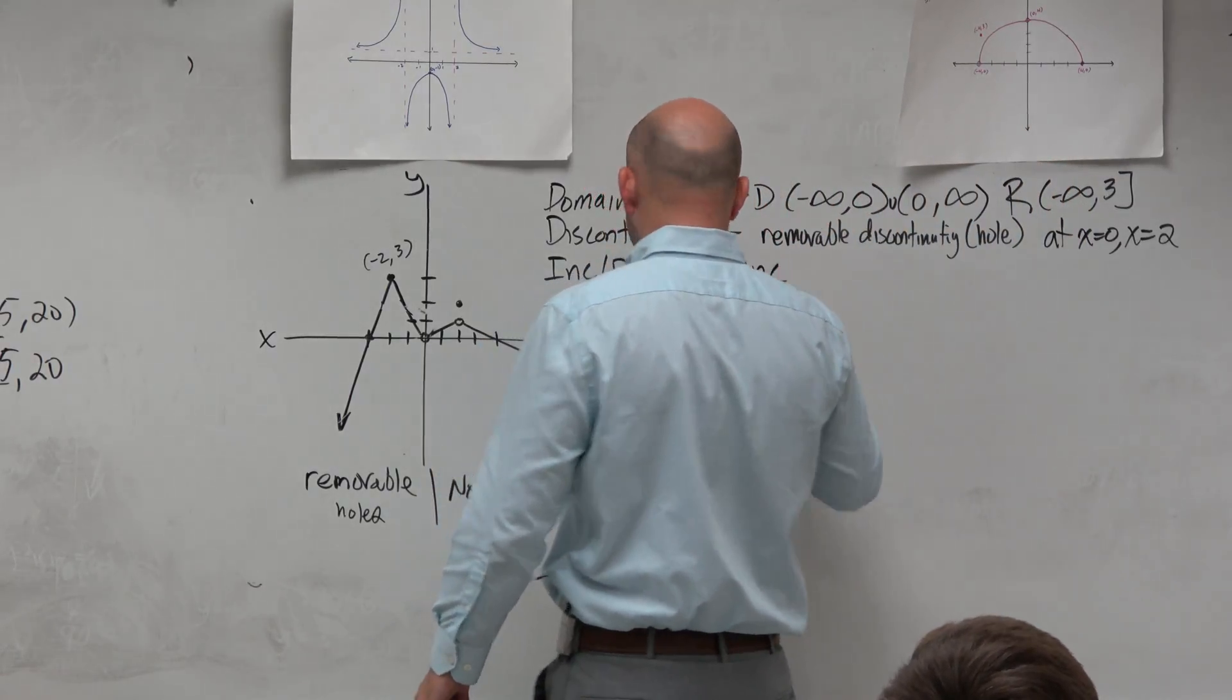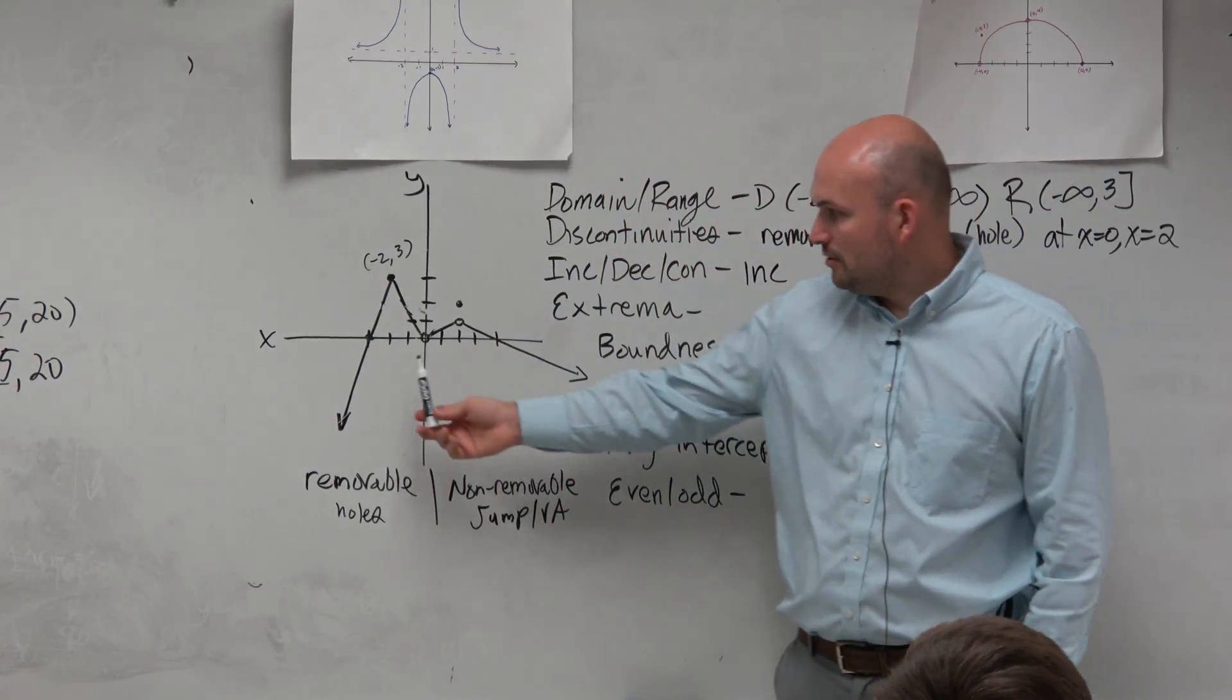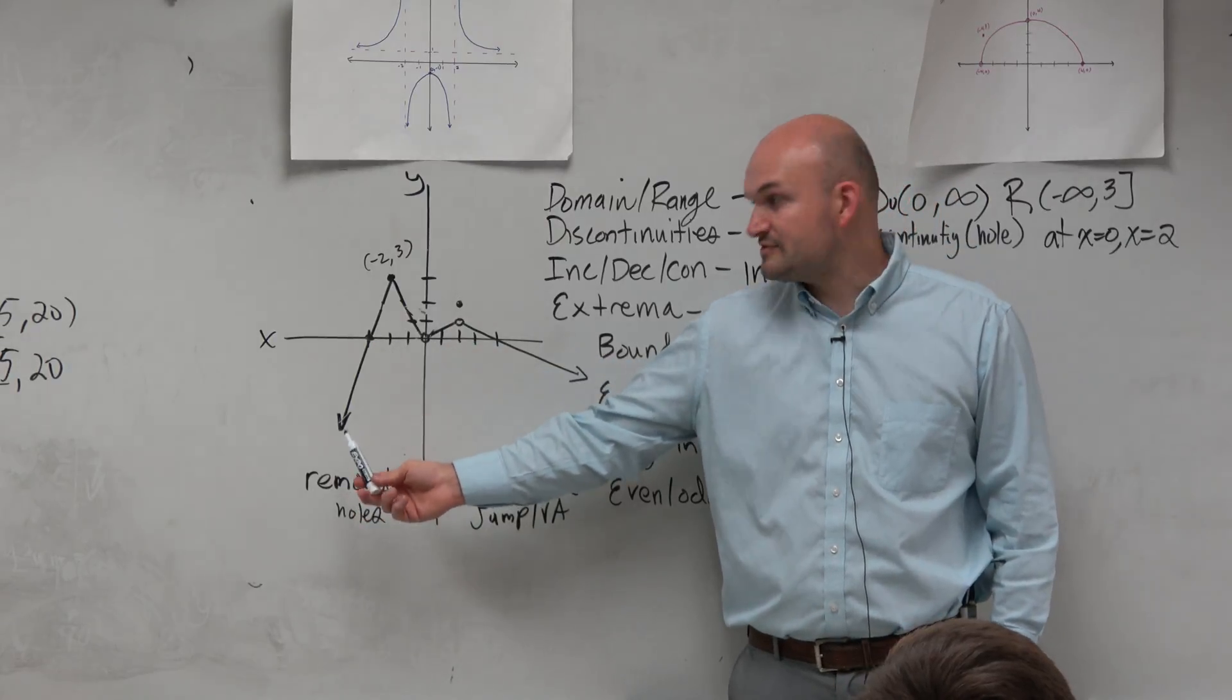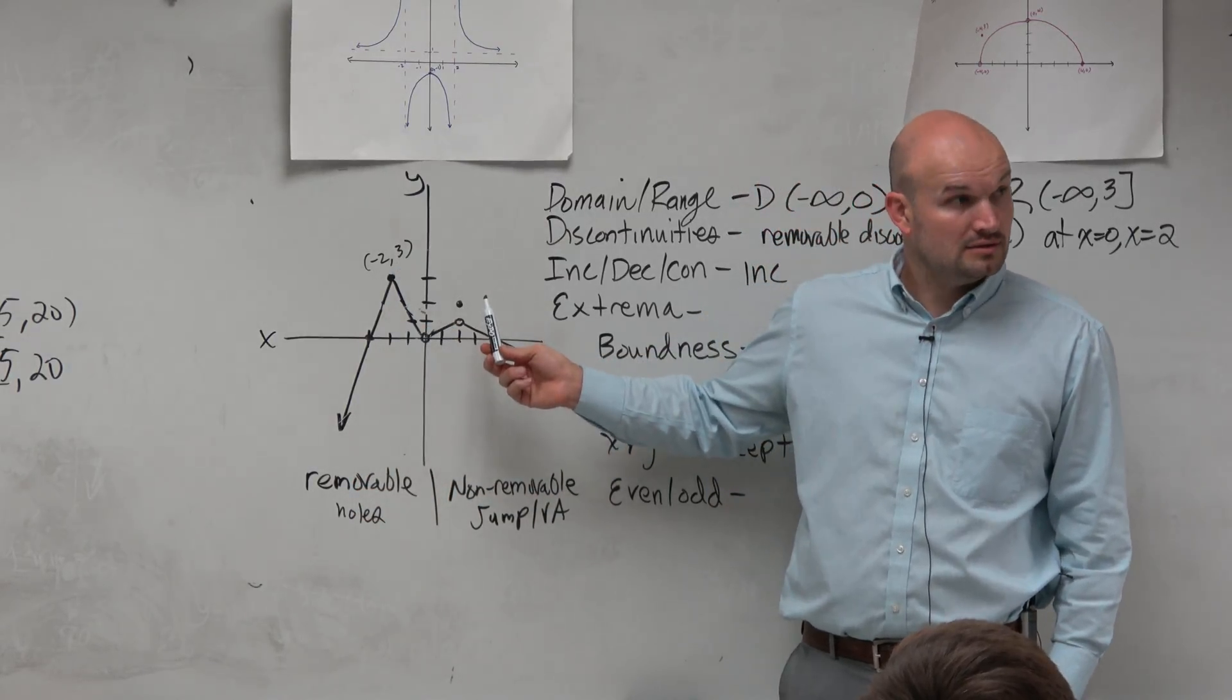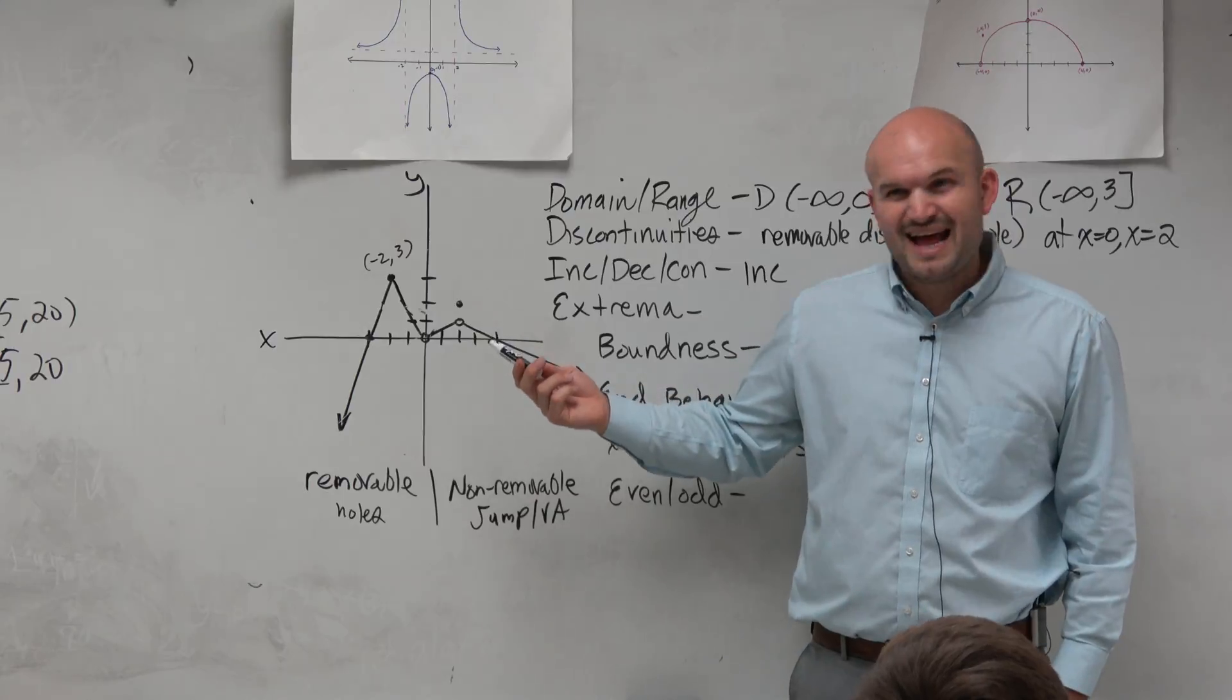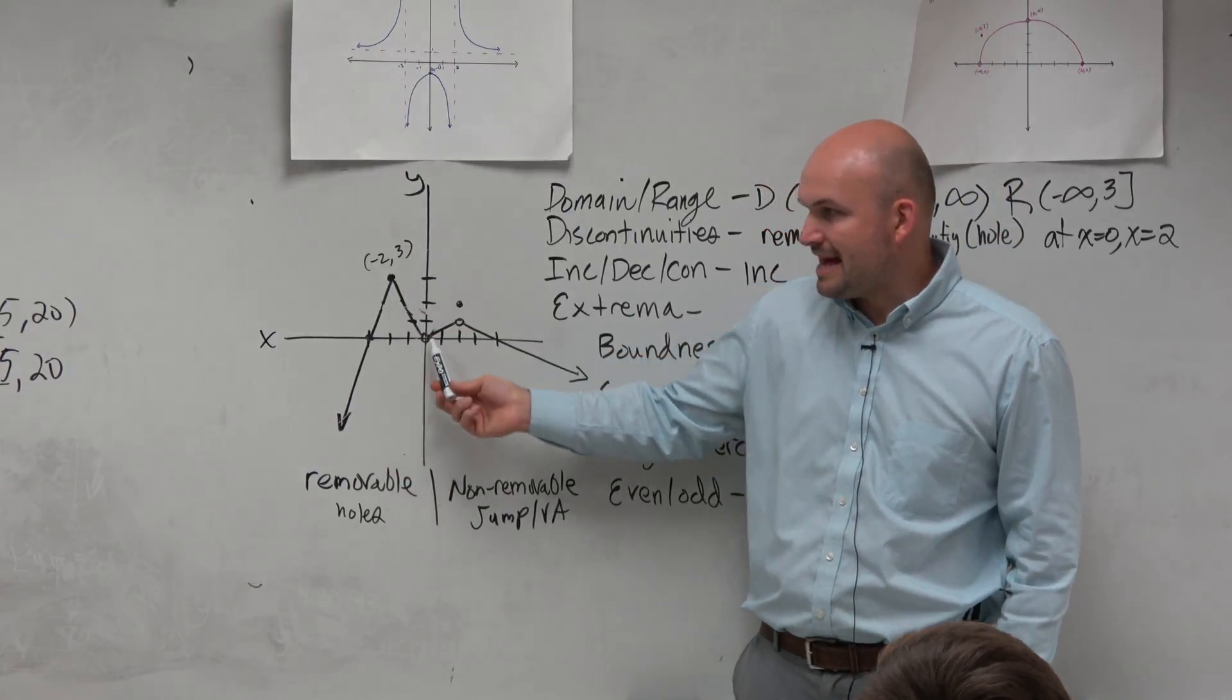So we can say increasing. Let's look at this. We can see that the graph has a positive slope here and here. So what x values then make up that line and that line?